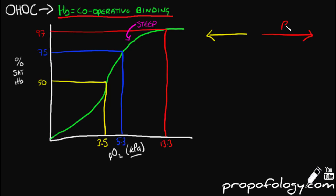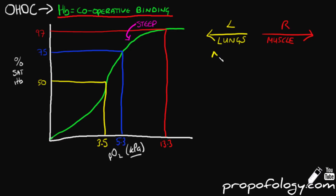What would happen if the oxygen haemoglobin dissociation curve were to shift to the right or to the left? The way to remember this is: if the curve shifts to the left, the conditions in the body are quite analogous to the conditions found in the lungs; and if it shifts to the right, the body's conditions are quite analogous to conditions found in muscle. Factors that shift the curve to the left facilitate the uptake of oxygen from the lungs, and the P50 value is lower than 3.5 kPa.